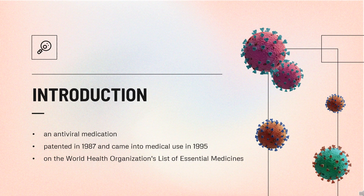What is valaciclovir? Valaciclovir, also spelled valacyclovir, is an antiviral medication used to treat outbreaks of herpes simplex or herpes zoster. It is also used to prevent cytomegalovirus following a kidney transplant in high-risk cases. It is taken by mouth.